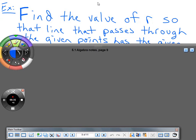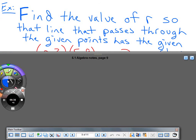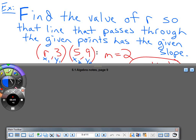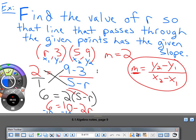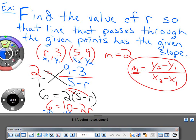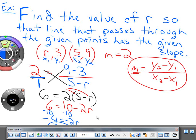Last problem lets us practice solving equations. Find the value of R so the line passes through the given points and has the given slope. We'll have R in either the X or Y coordinate. Set it up by plugging in the slope. The slope is 2, written as a fraction on the left. Subtract the Y coordinates: 9 minus 3 over the X coordinates: 5 minus R. Then cross-multiply.